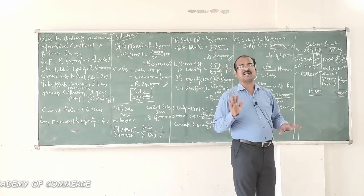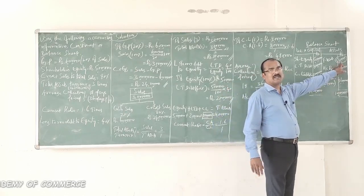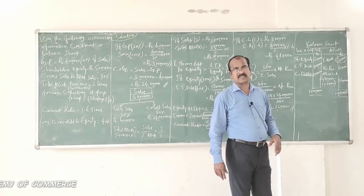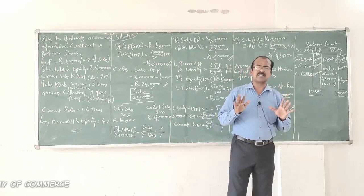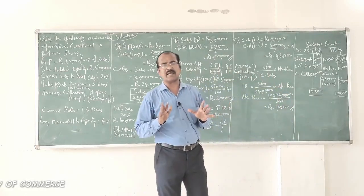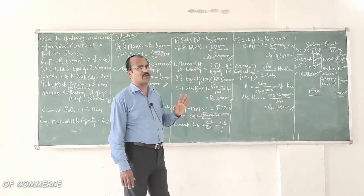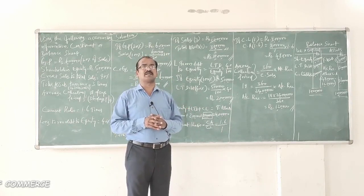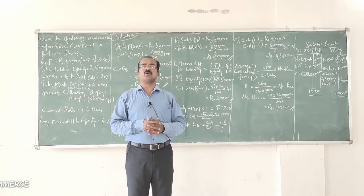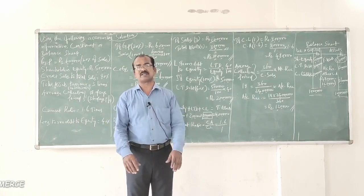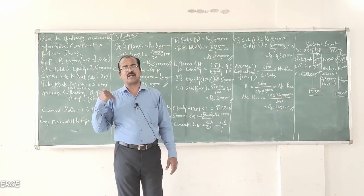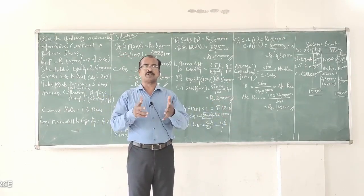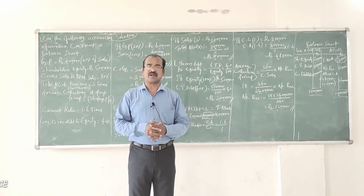The balance remaining on the asset side is nothing but fixed assets, which is the balancing figure in this problem — that is why I have put a circle around it. This is an interesting and very important problem in ratio analysis. I suggest you watch this video a couple of times to gain better understanding. Good luck everyone — I'll meet you in another video, bye for now!